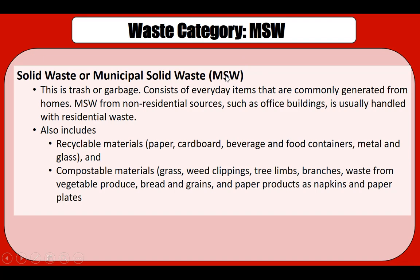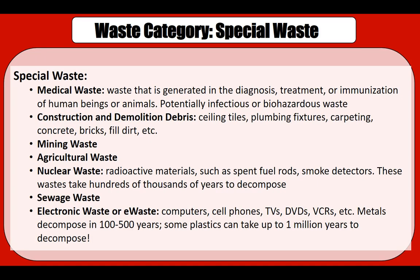The first category is municipal solid waste, or MSW, also known as solid waste. This is essentially the trash or garbage we produce at home. It consists of everyday items commonly generated from homes, and MSW from non-residential sources such as office buildings is usually handled with residential waste as well. It contains paper, cardboard, beverage and food containers, metal, and glass — essentially everything we throw in the trash at home. Much of this is recyclable or compostable.